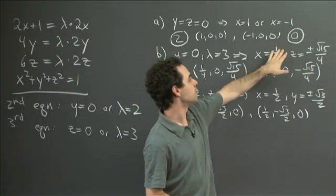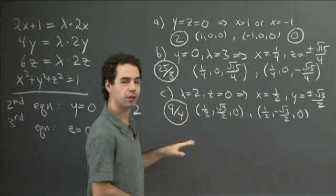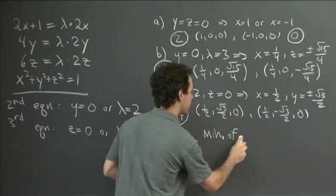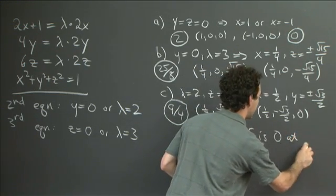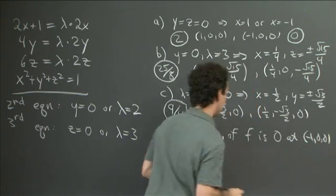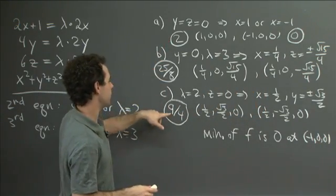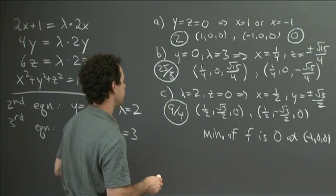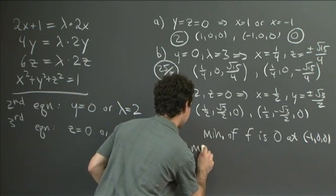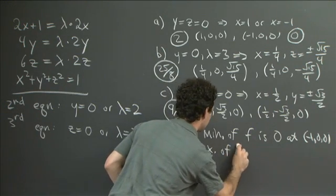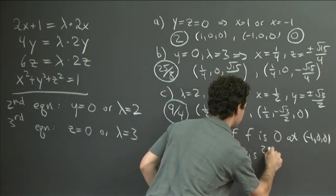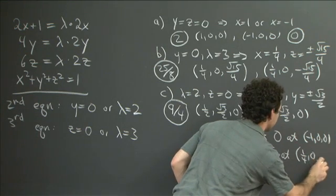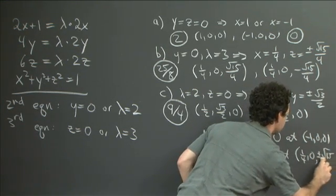To find the maximum and minimum values, we just compare the values we got and say which is biggest and which is smallest. It's easy to see that 0 is the minimum — all the other values are positive — so the minimum value of f is 0, achieved at the point (−1, 0, 0). Comparing 2, 25/8, and 9/4, we see that 25/8 is the largest, since it's bigger than 3 while both 2 and 9/4 are less than 3. So the maximum of f is 25/8, achieved at the points (1/4, 0, ±√15/4).